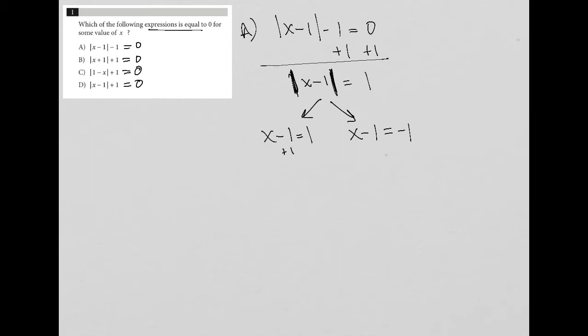So in this case, I'd add 1 to both sides and I'm left with x equals 2 as a solution. And here I'd also add 1 to both sides and I'd be left with x equals 0 as a solution. So answer choice A does work because we get two x values, 0 and 2, that make it true.